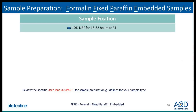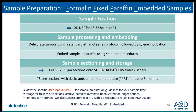Here is an example of recommended sample preparation. With formalin-fixed paraffin-embedded (FFPE) samples, we recommend fixing in 10% NBF for about 16 to 32 hours at room temperature. The recommended sample thickness is 4 to 6 microns, and we recommend that the tissue is mounted onto SuperFrost Plus slides. To preserve RNA quality, store sections with desiccants at room temperature for up to 3 months. For long-term storage, store at 4 degrees with desiccants.